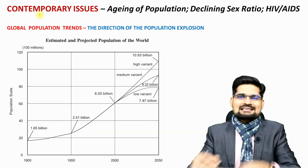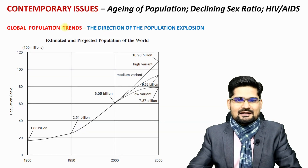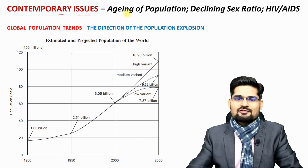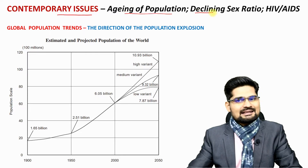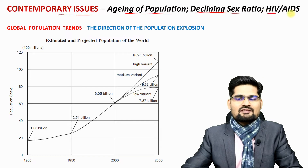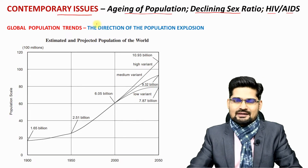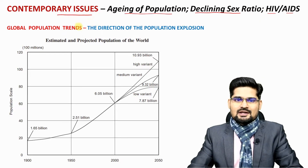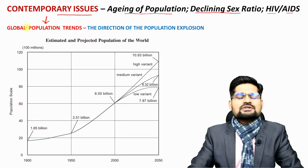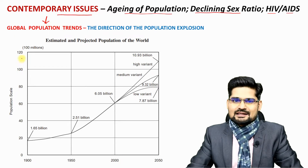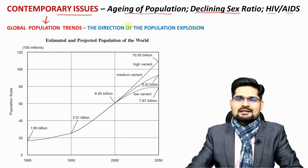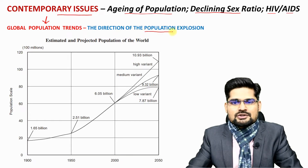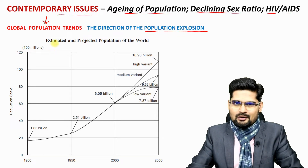So now let's discuss the various contemporary issues related to population across the world — for example, aging of population, declining sex ratio, HIV AIDS and several others that we are going to cover in this lecture. Let's begin with the global population trends itself and observe where the population is heading. What is this population explosion that we keep talking about?